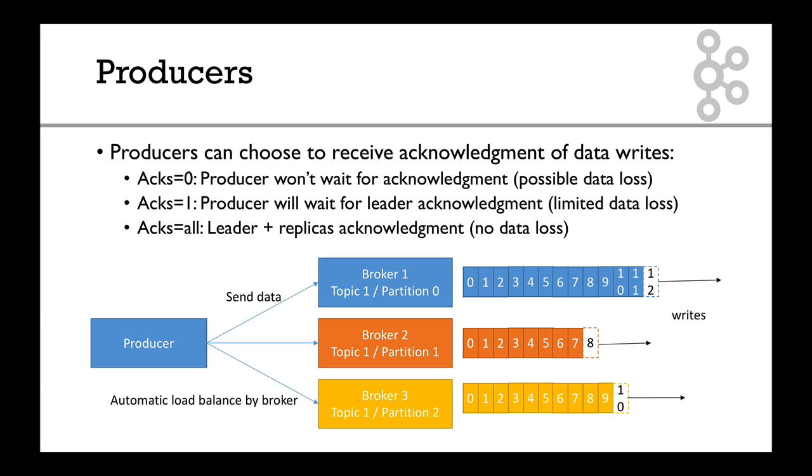It depends on the kind of data you have. If it's a log, you can go acks=0, or if you want really high throughput. If it's transactional data and you cannot afford any data loss, go for the last one.